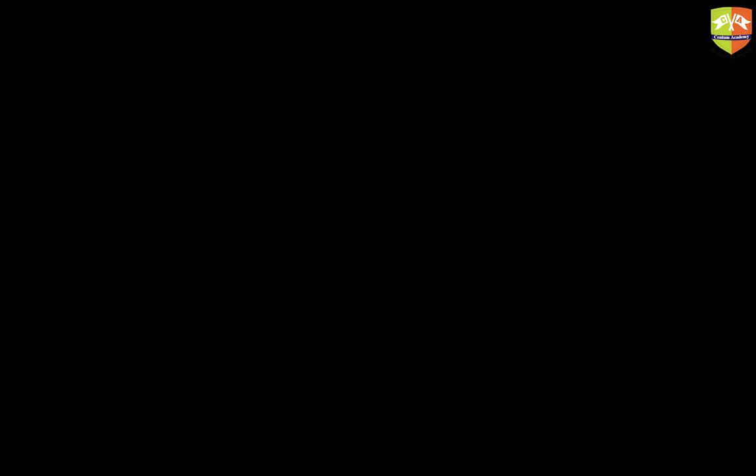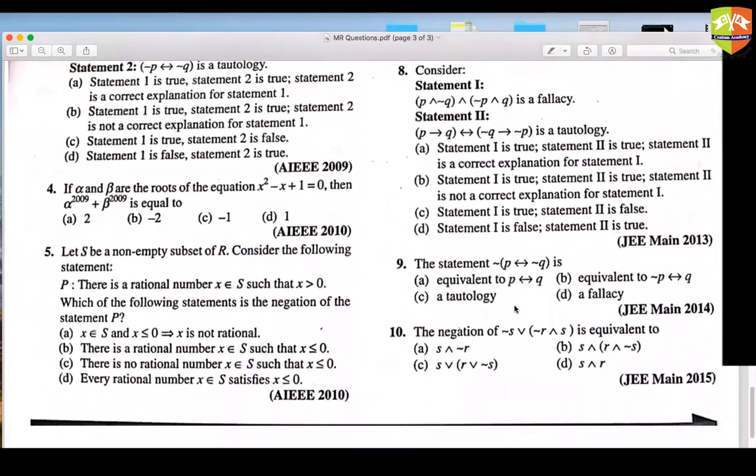Let's see whether we have a question based on this in our previous JEE exams. Let's say I take this question, question number 5. Read this question. Let S be a non-empty subset of real numbers. Consider the following statement. P says there is a rational number x belonging to the set S such that x is greater than 0. Which of the following statements is the negation of this?